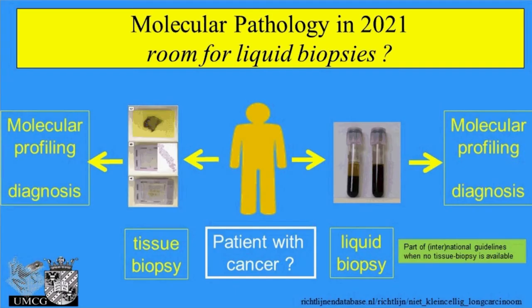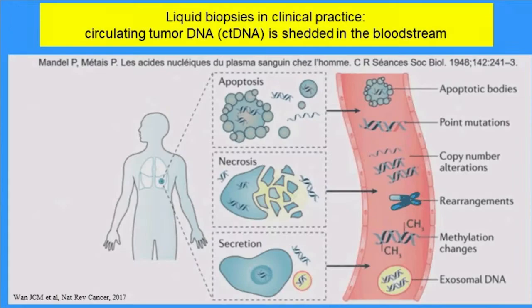We do molecular profiling mostly on tissue biopsies, but now we're moving to see whether we can use liquid biopsies as a tool to do the analysis. This is not new because it's already part of many international guidelines that allow testing liquid biopsies when no tissue biopsy is available for lung cancer patients. What is a liquid biopsy? Today we talk only about circulating tumor DNA. The tumor that grows in the body dies by apoptosis/necrosis, and tumor components are shed into the bloodstream of the patient.